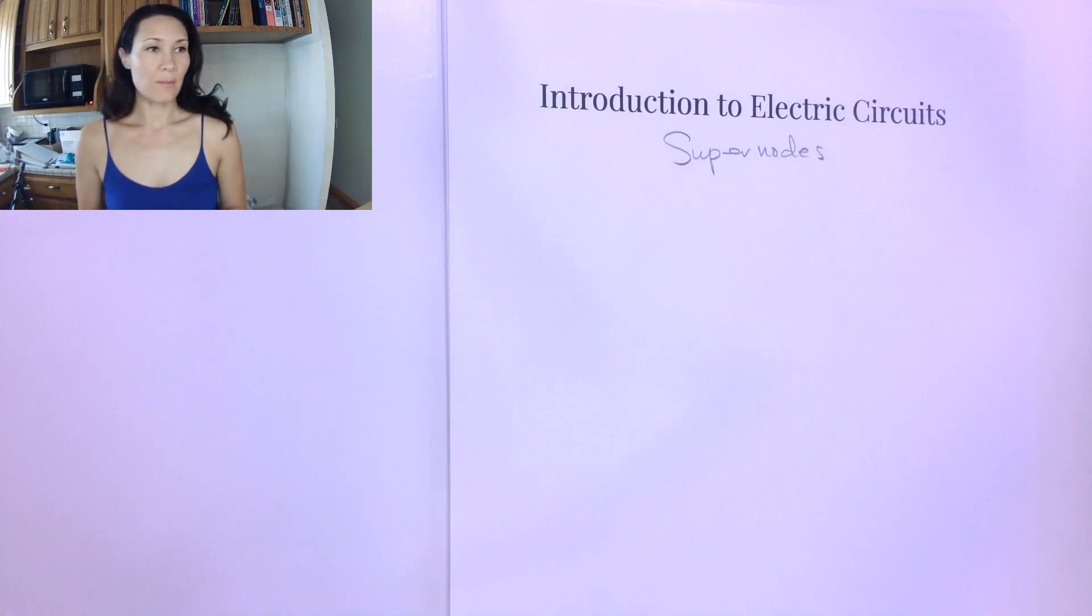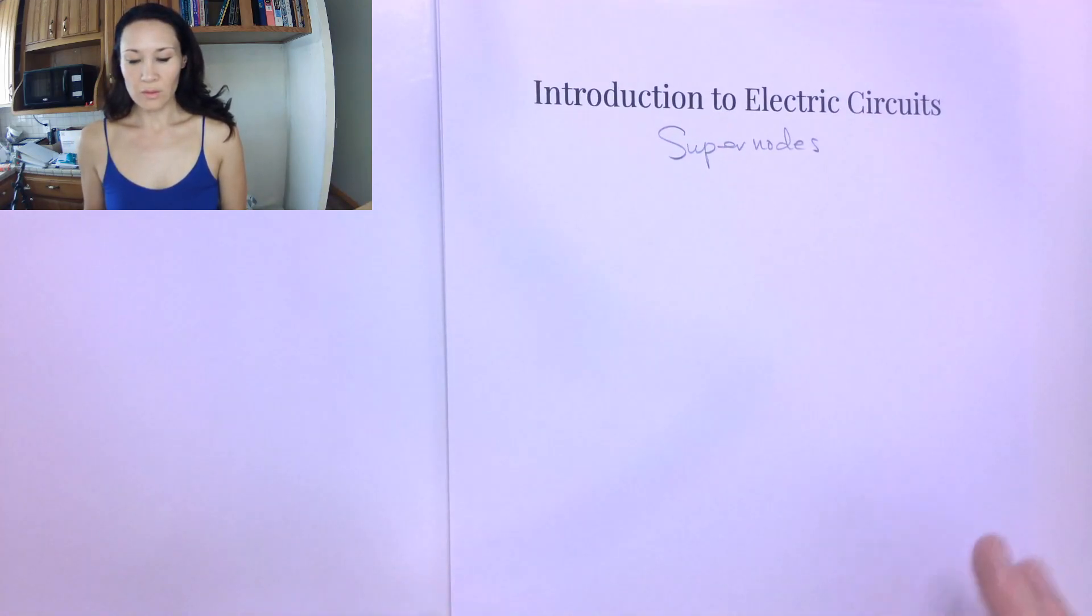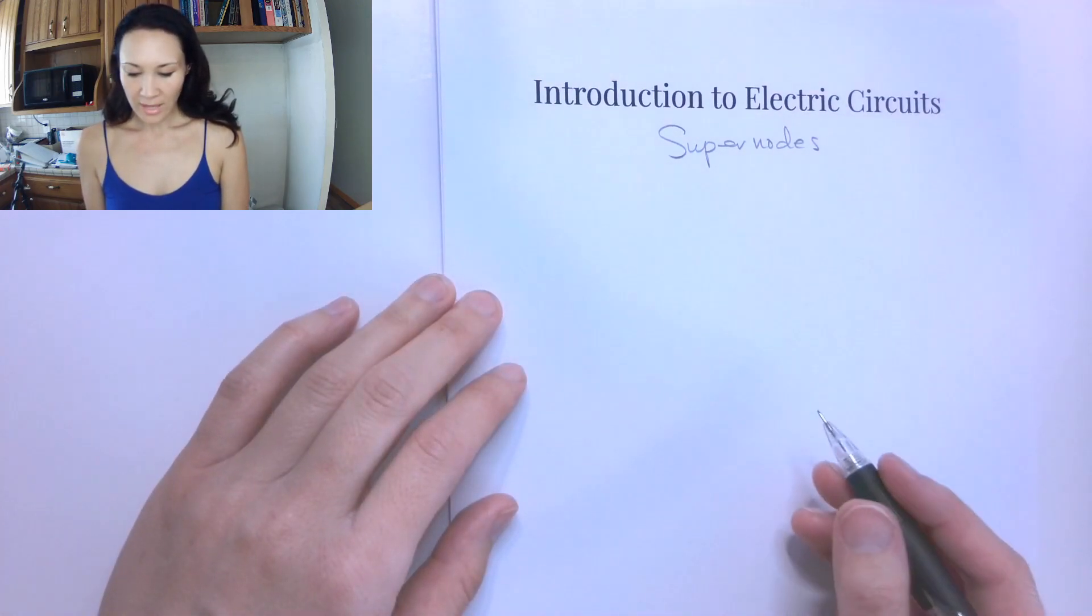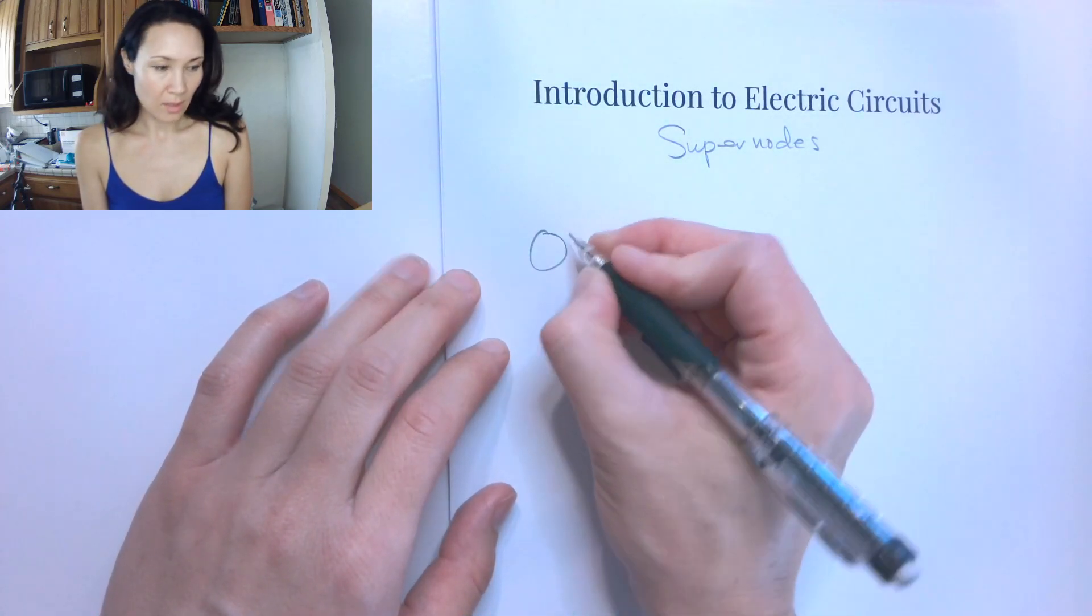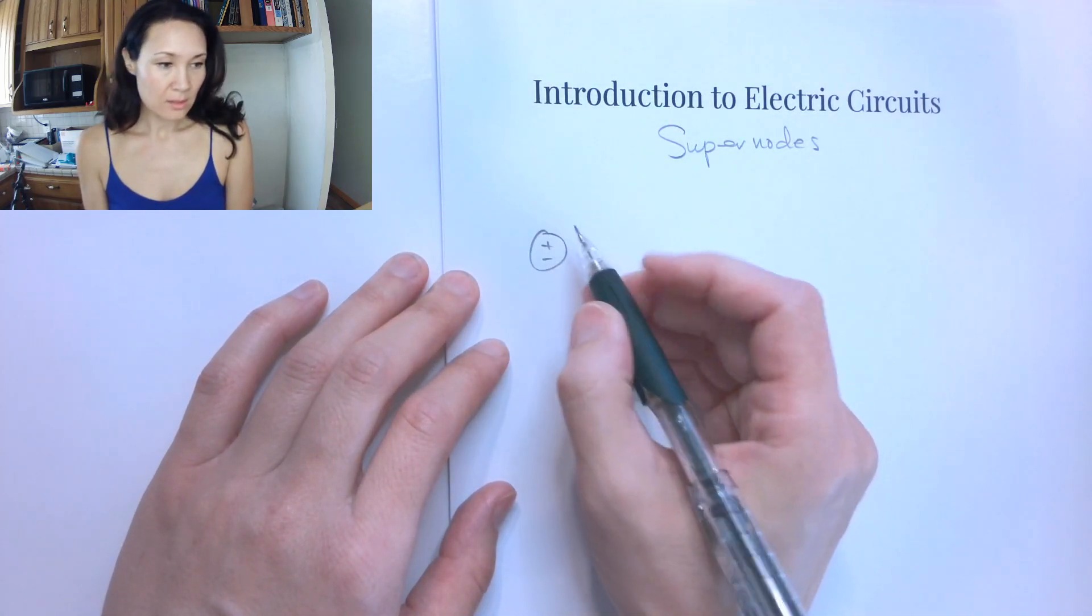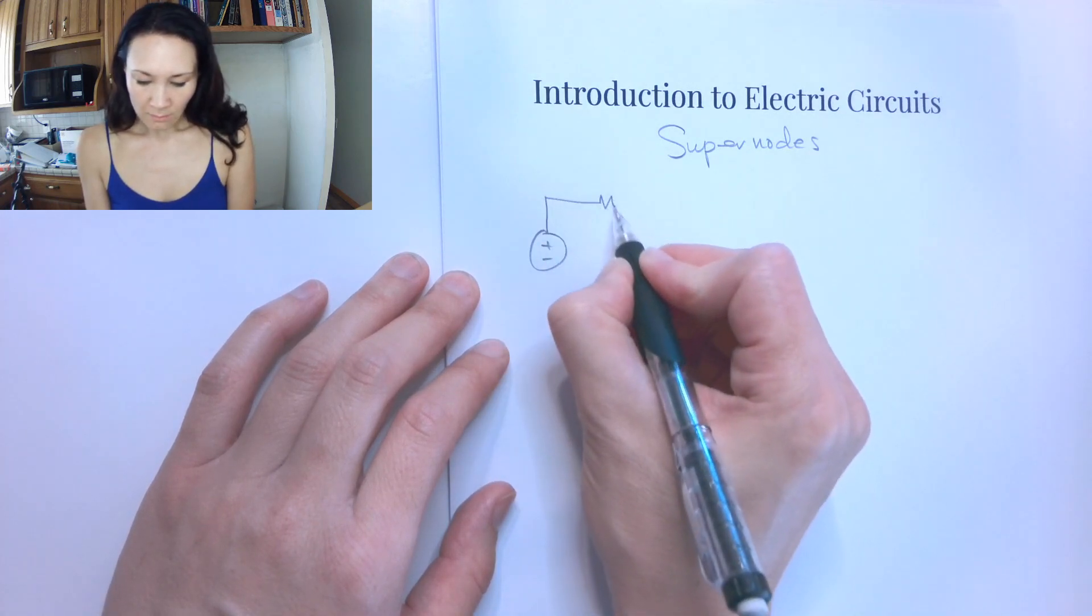The next thing we need to talk about in our discussion of the node voltage method for solving circuits is how do we handle a voltage source in between two nodes. When that happens, we call it a super node, and we have a neat little trick for solving that. So let me show you an example.